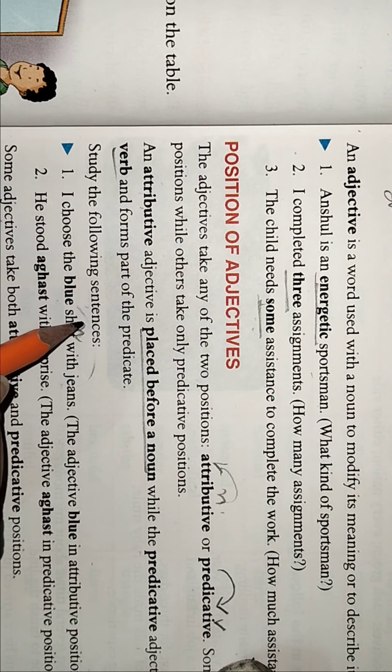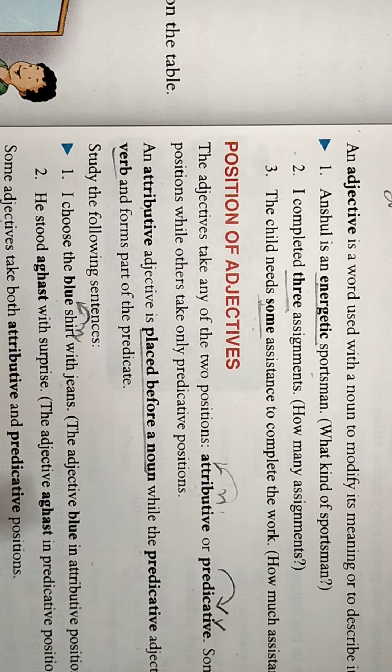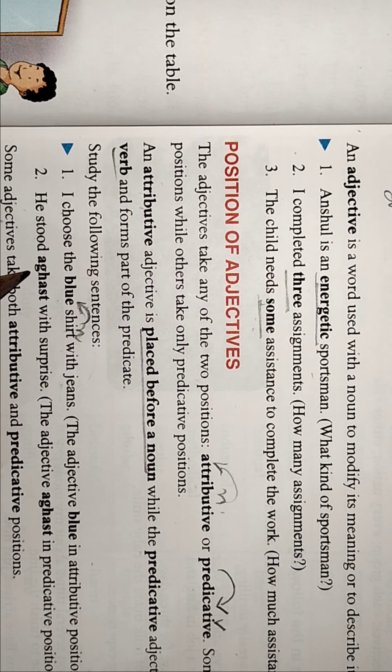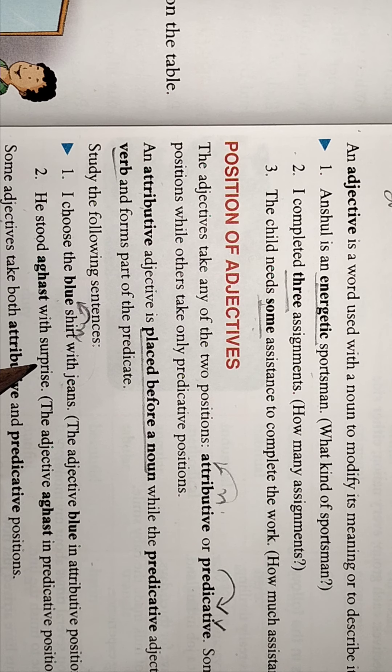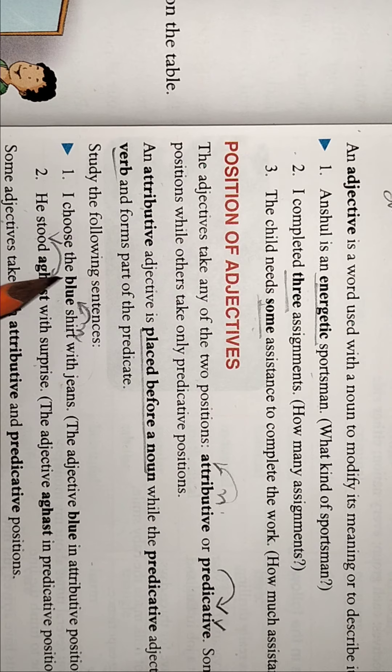This shirt is also a noun, jeans and shirt both are noun. So this is the noun, so it is placed before the noun so it is an attributive. He stood aghast with surprise - stood, this is the verb, so it is placed after the verb.